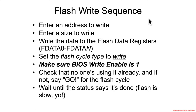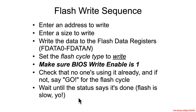Jumping back to the section on flash register programming, there was a step that was briefly skipped over: enter an address to write, enter a size to write, enter the data to write into the FD registers, set the cycle type to write — and then you have to make sure that BIOS write enable is equal to 1. That needs to be set before you can say go and have the flash write actually happen.